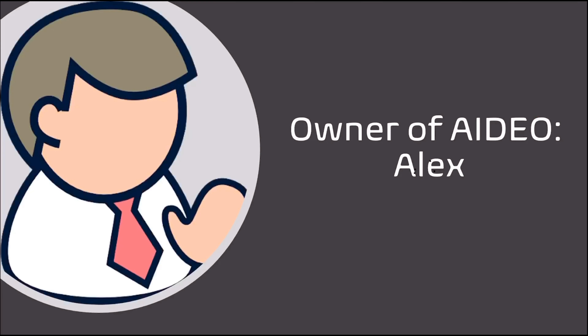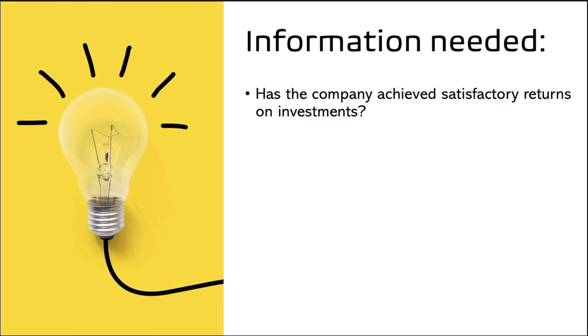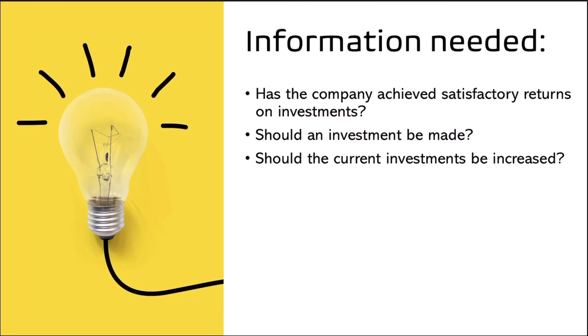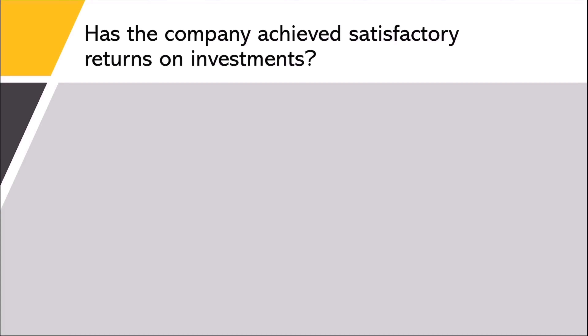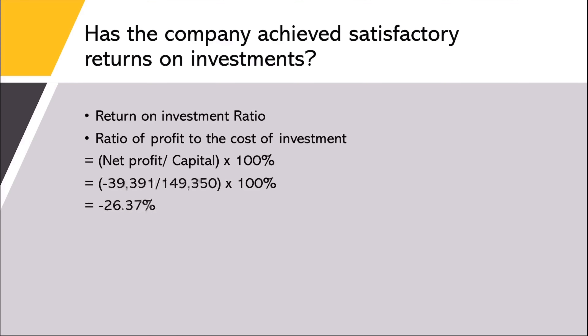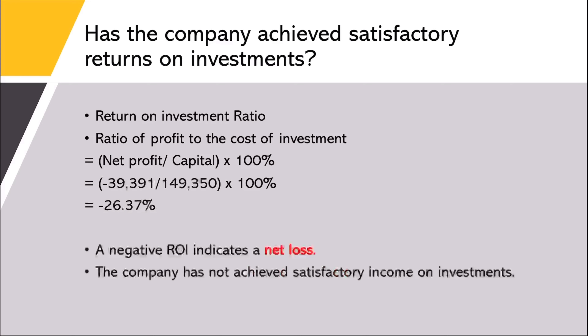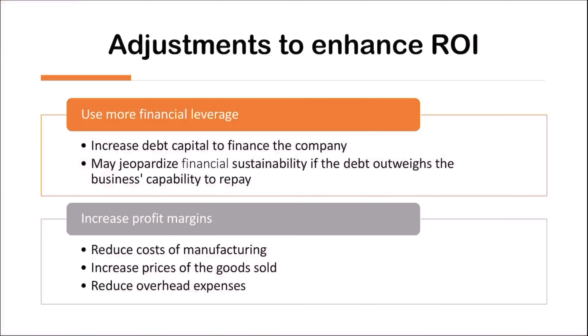After understanding the financial reports, we will now present them to the owner, Alex. Alex needs to know the general well-being of his business and whether or not to take expansionary action. To decide on that, the return on investment ratio is calculated as shown. A negative value suggests that the company is generating more losses for one share of its capital. To prevent this from worsening, the company should increase their debt capital instead of solely relying on investments.